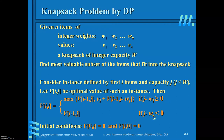Whenever j minus w_i is less than 0, that means you cannot accommodate the i-th item into the sack. During that time, you have to consider whatever value you have earned when you considered i minus 1 items with capacity j. That same value is assigned to v[i][j], that is, v[i][j] equals v[i-1][j].